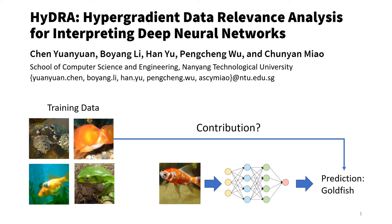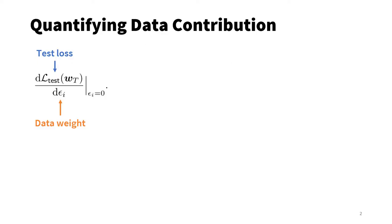In this paper, we are interested in explaining how training data affect the decisions of neural networks. To evaluate the contribution of training data, we assign a weight, epsilon, to every training data point.